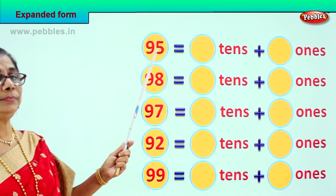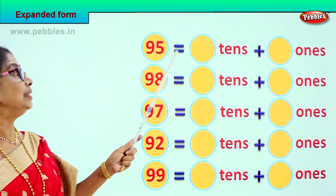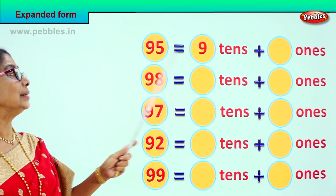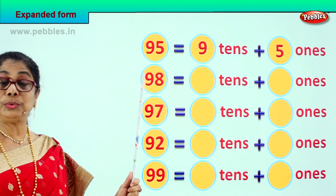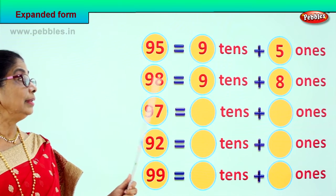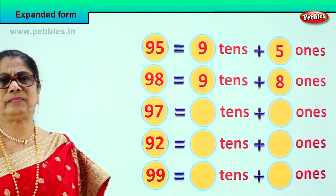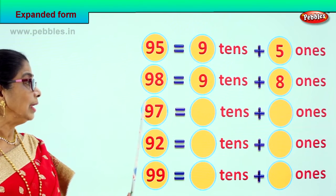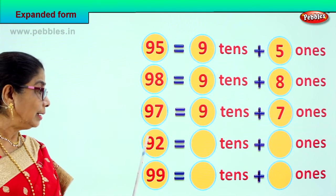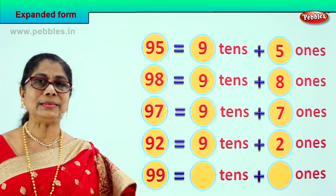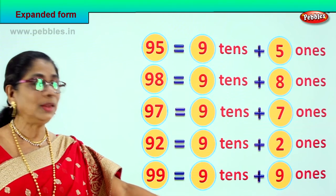Let's take another set of numbers. 95 — put in tens and ones. 95 is equal to 9 tens and 5 ones. 98 is equal to 9 tens and 8 ones. 97 is equal to 9 tens plus 7 ones. 92 is equal to 9 tens plus 2 ones. 99 is equal to 9 tens plus 9 ones.